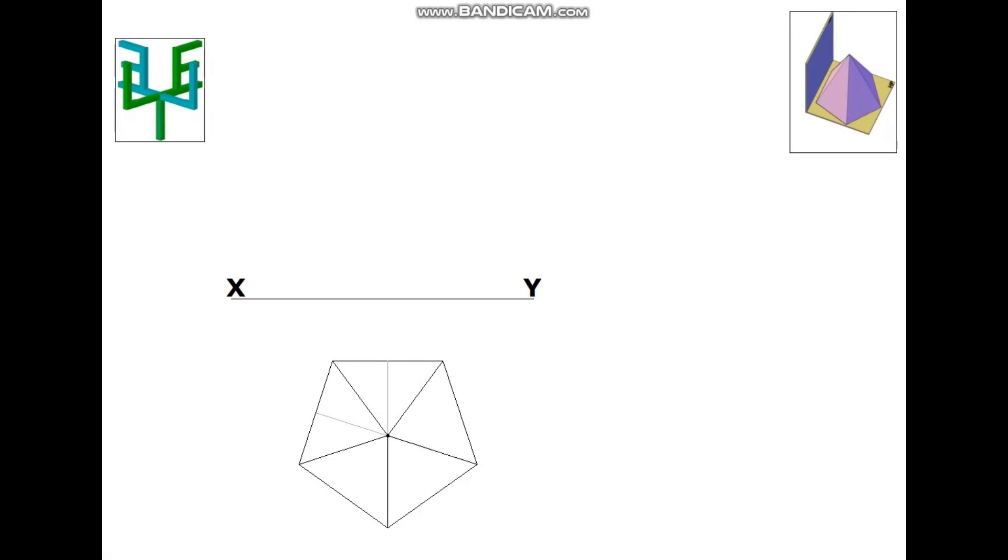Name the corners as 1, 2, 3, 4 and 5. Name the apex point as O. Project the apex point, draw the axis line and maintain the height of the pyramid in the elevation. Project all the base corners. Join the base corners to the apex point.